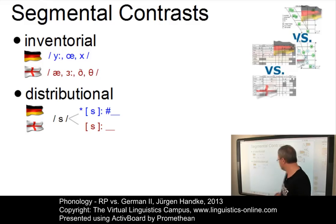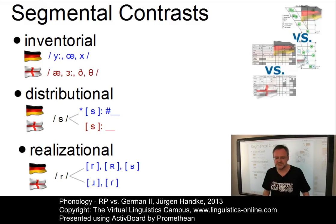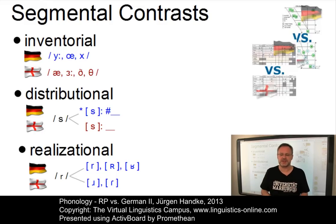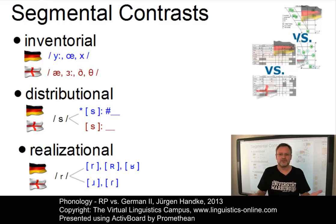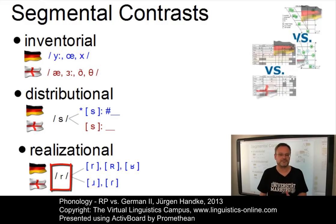And then there are realisational contrasts — that is, the phonemes of two languages might be similar, but their precise realization is different. For example, the low back vowels in RP versus German, or the realization of the R phoneme in the two languages.